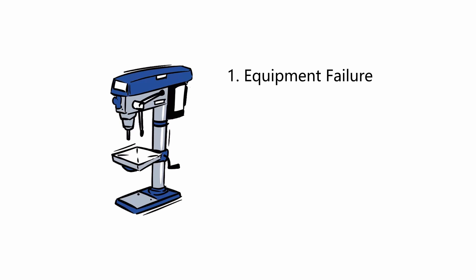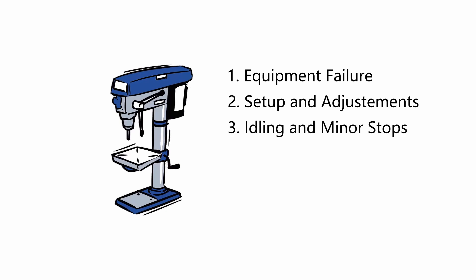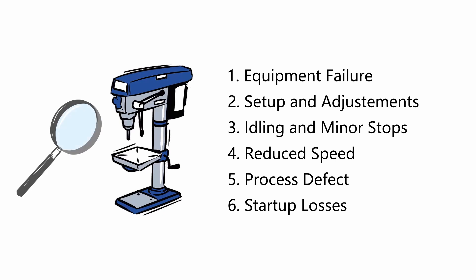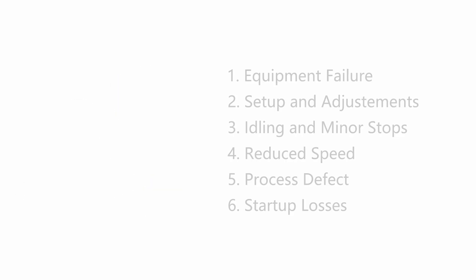The six categories are: 1. Equipment failure. 2. Setup and adjustments. 3. Idling and minor stops. 4. Reduced speed. 5. Process defect. 6. Startup losses. It is very important to know and classify these losses in order to implement effective countermeasures to eliminate them.